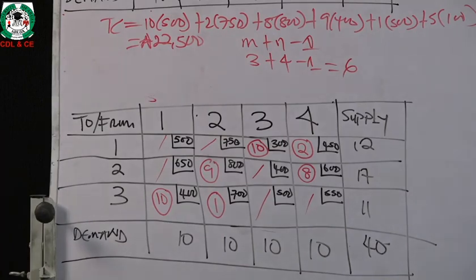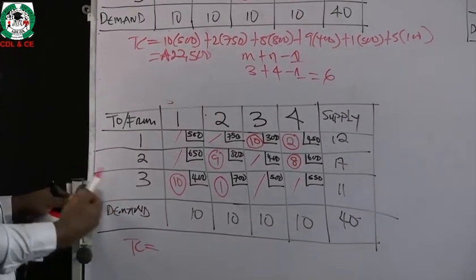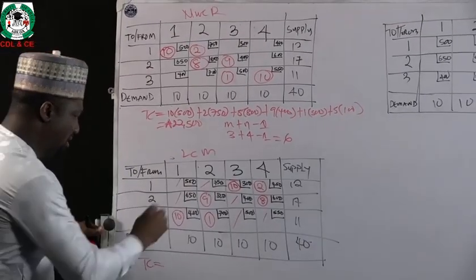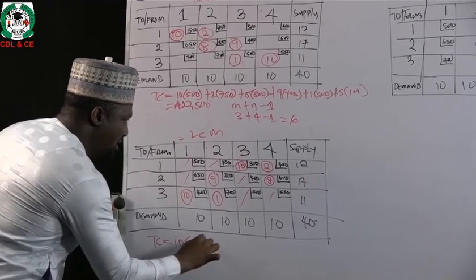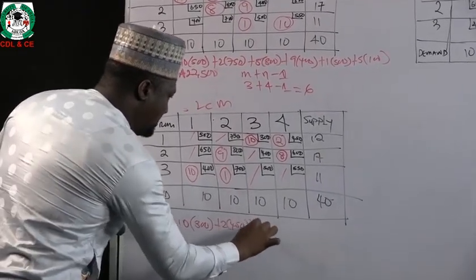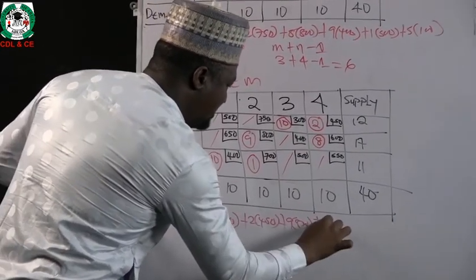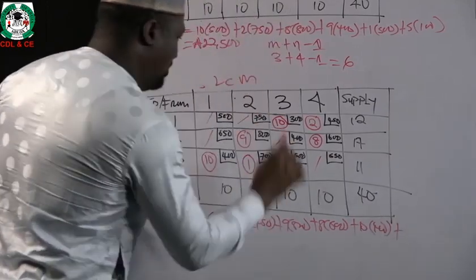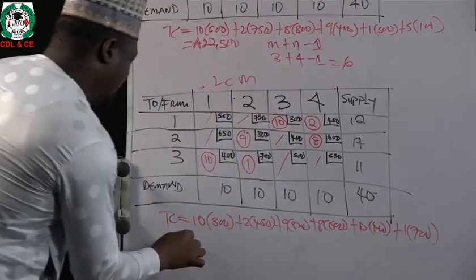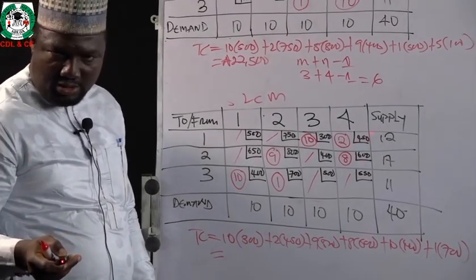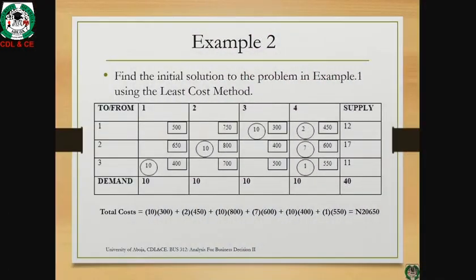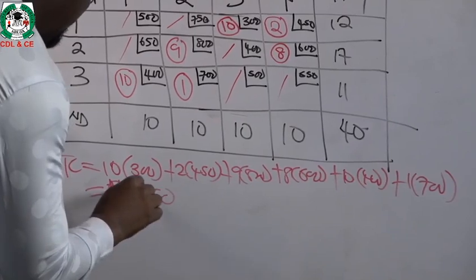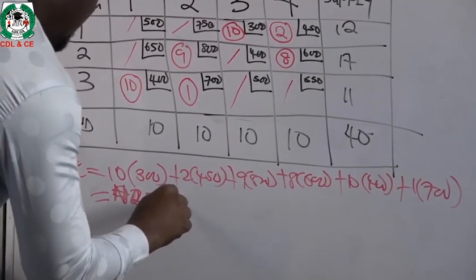The least cost method gives better results than the northwest corner rule. Computing the total cost: 10 times 300, plus 2 times 450, plus 9 times 800, plus 8 times 600, plus 10 times 400, plus 1 times 700. This gives a total cost as shown on the board of 20,650.